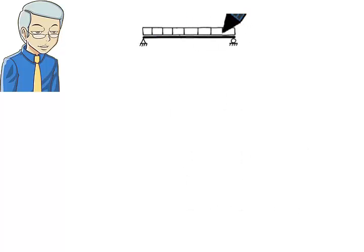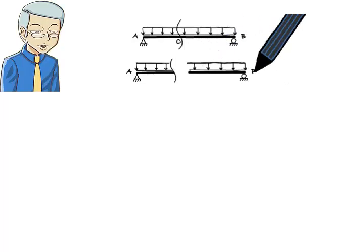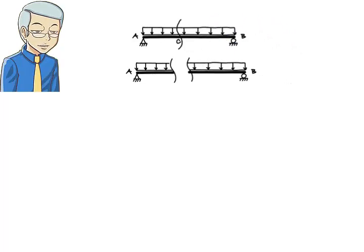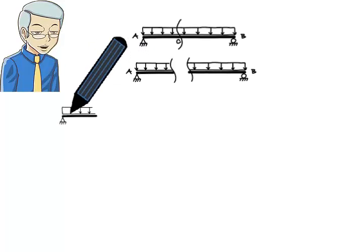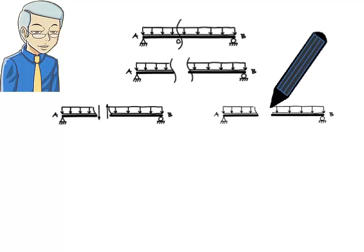Consider a simple beam. If we cut it, say at point C, we need to show the internal shear force and bending moment at the cut point. The shear force has to be shown as a pair of vertical forces acting in opposite directions, so the pair has to be drawn either like this or like this.